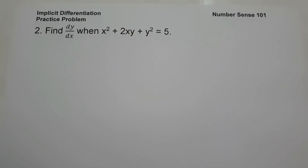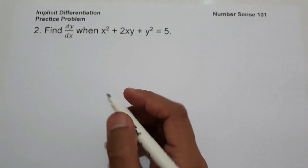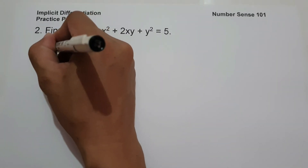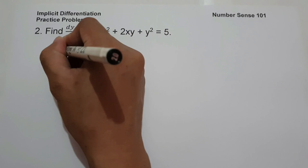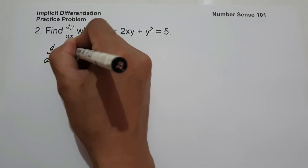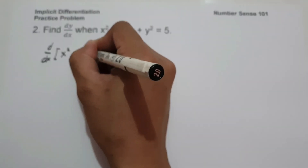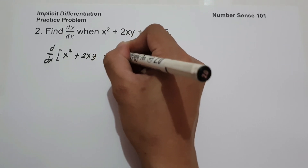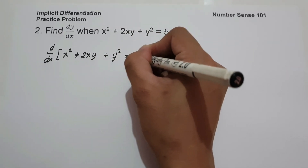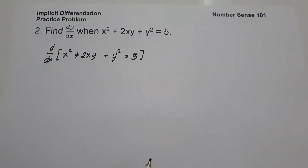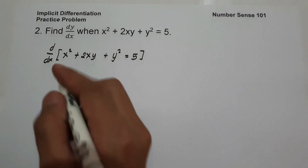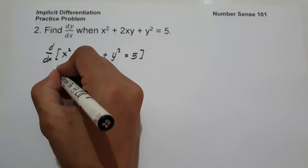On number 2, find dy over dx when x squared plus 2xy plus y squared equals 5. To find the value of dy over dx, let us differentiate this equation. Let us have d over dx of x squared plus 2xy plus y squared equals 5. The derivative of x squared is 2x.